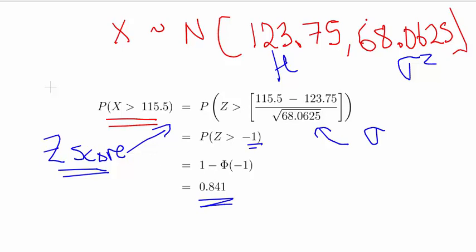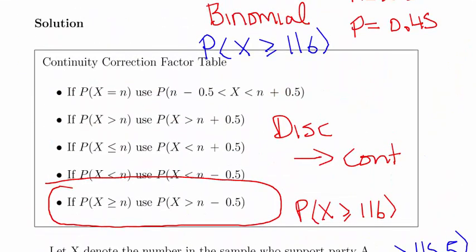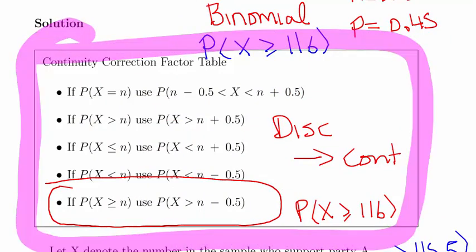So that's it really. The key thing there really, binomial, setting up the binomial mean and the binomial variance, and getting the equivalent normal mean and normal variance. And of course, these continuity correction factors. So I think that's it really. We'll leave it there.